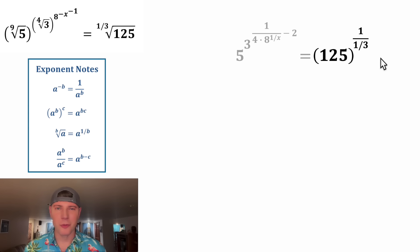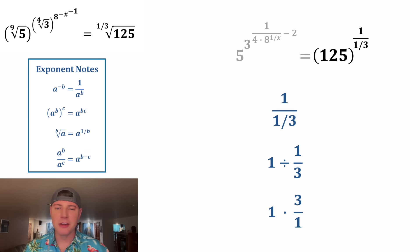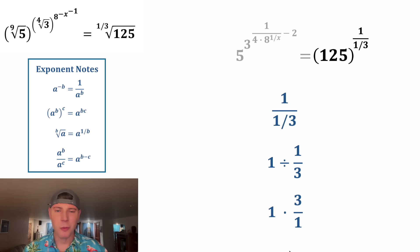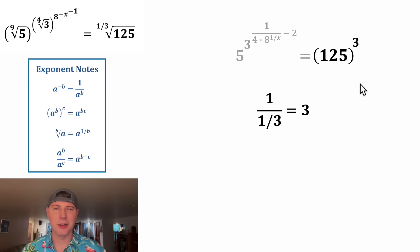Now let's simplify the one over one-third. One over one-third basically means one divided by one-third. Any time you divide a fraction, you can multiply and flip the fraction — a lot of people call this keep, change, flip. You keep the first number, change the divide to a multiply, and flip one-third into three over one. One times three over one is three, so this one over one-third is equal to three. So we can change this exponent into three.